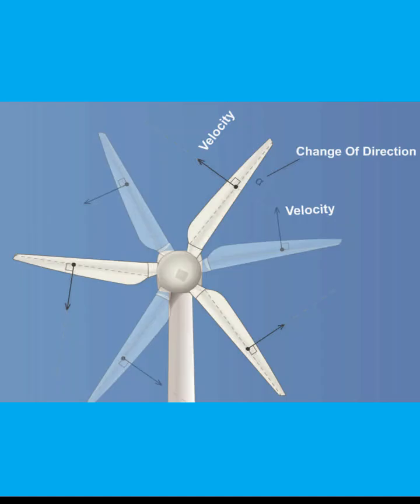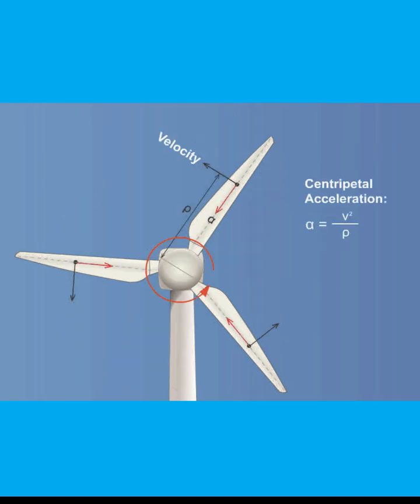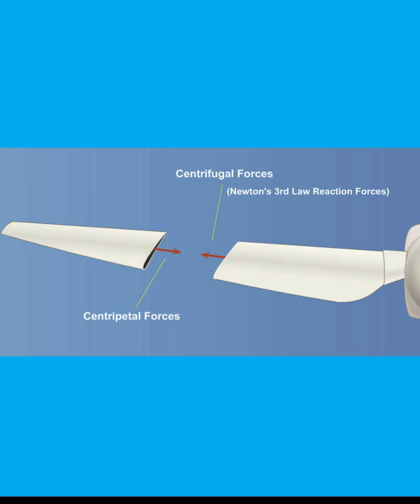The velocity of each particle inside the blade changes direction as the rotor rotates. This change of direction is a form of acceleration of the particle toward the center, or axis, that the blade revolves around. This acceleration is caused by the centripetal force.